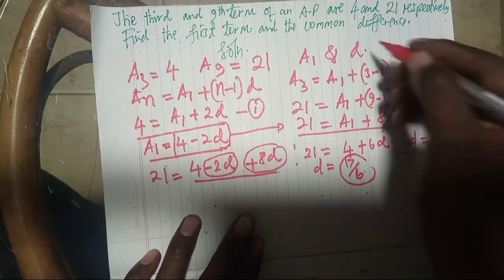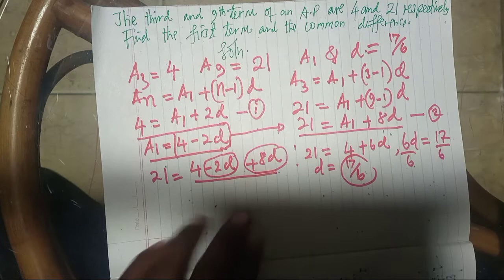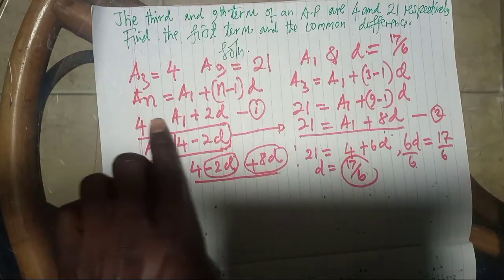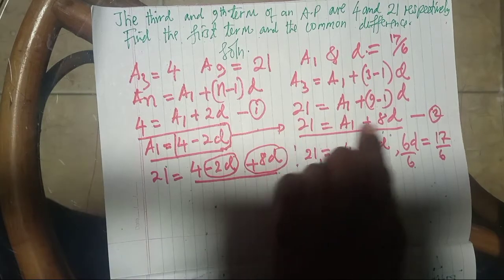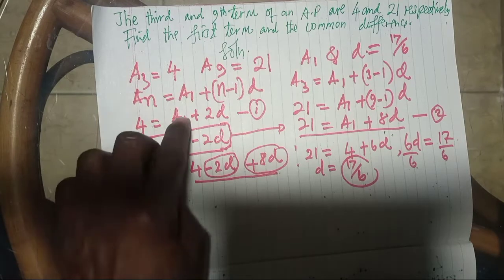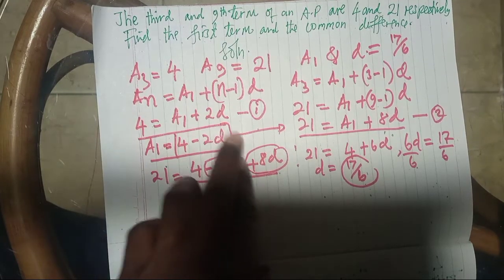This is the value of D. D equals 17 over 6. We have found D, which is 17 over 6, after using this equation and this equation. This is by substitution method, where we substitute it here.